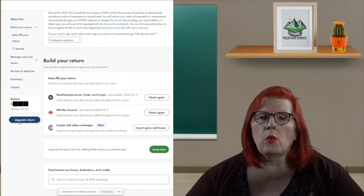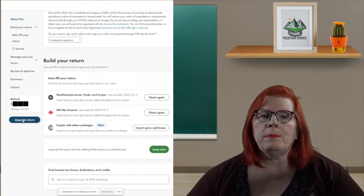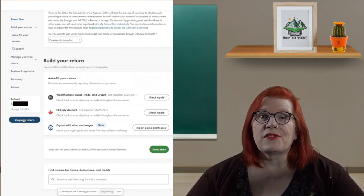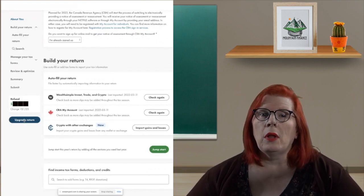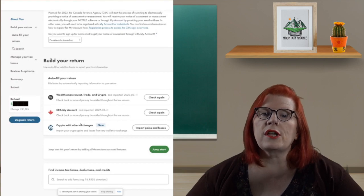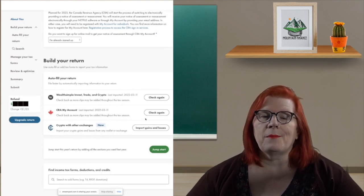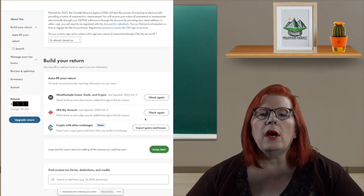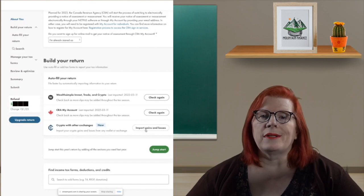Once we get to the bottom, we now have the options to add our crypto gains. You may have noticed the upgrade return button. That is simply to let a professional from Wealthsimple help you out, which will of course come with a fee if it is something you want. We are just going to add our crypto instead.